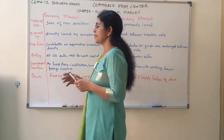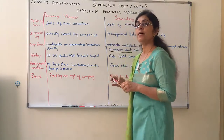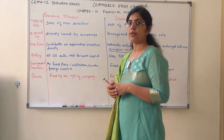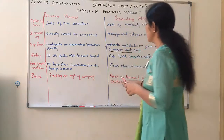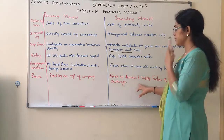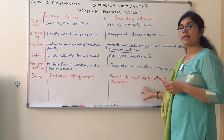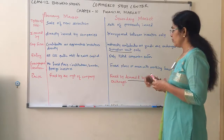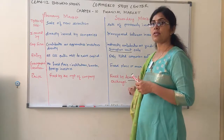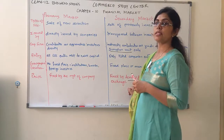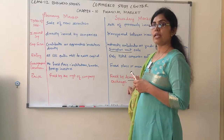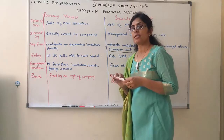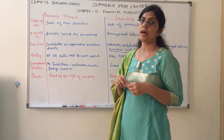Price. Who is deciding the price of securities in the primary market? It is fixed by the management of the company. Whereas, the price of securities in the secondary market is fixed by demand and supply factors of the stock exchange — how demanding the security is, what is the supply of the security, and whether it is available easily. According to all those factors, the stock exchange will decide the price.